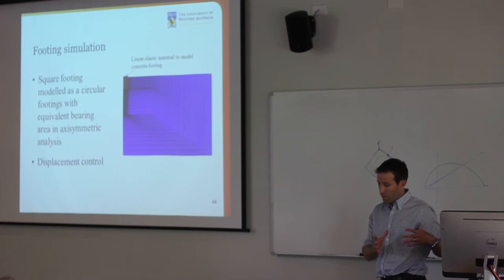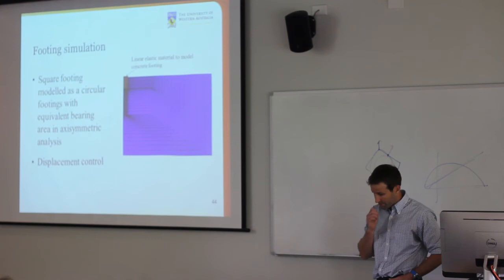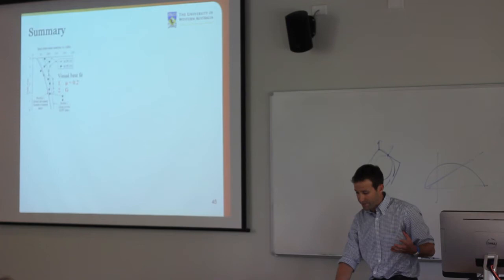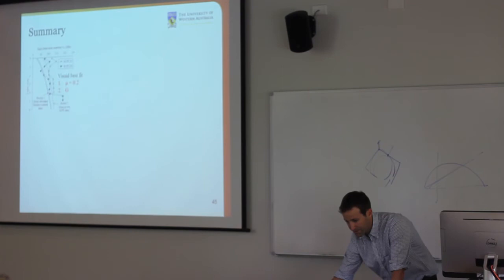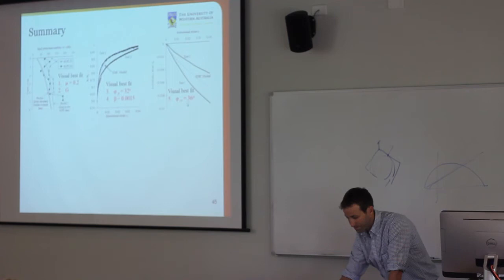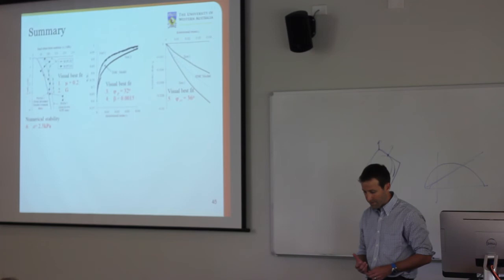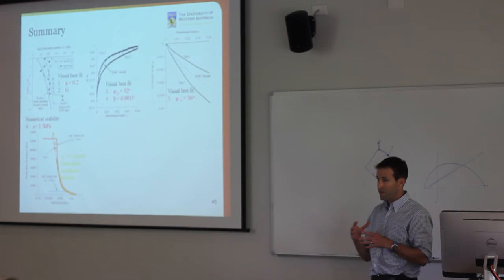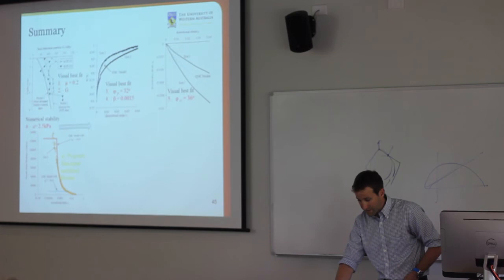For simulating the square footings, they were modelled as axisymmetric footings with equivalent area — setting the radius to give the same area as the square footing — and done with displacement control. To summarise the process: small-strain stiffness values from bender elements and shear wave velocity gave parameters G and μ (parameters 1 and 2); triaxial stress-strain data gave parameters 3 and 4 (φ_p = 32°, β = 0.005); volumetric response in triaxial compression gave the fifth parameter (φ_cv = 36°); attraction of 4 kPa for numerical stability; and initial φ_y set to about 10% above the initial mobilised friction angle based on K₀ stresses. This was then fed into the numerical model.